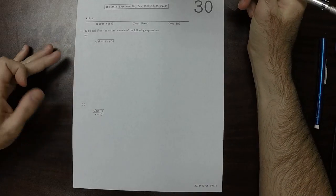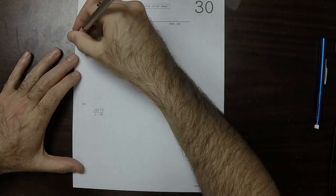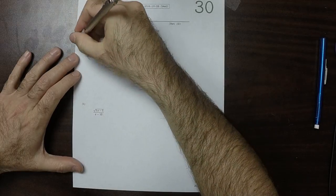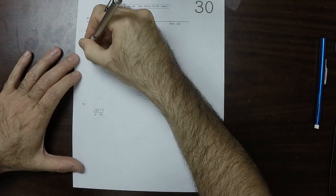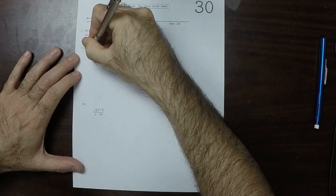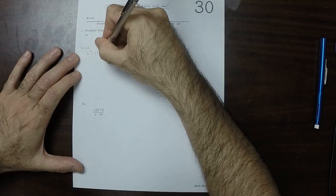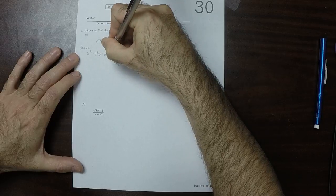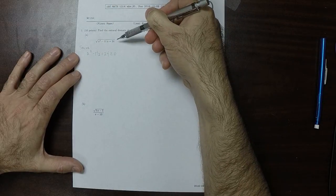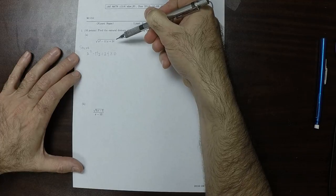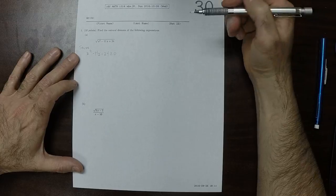This is the solution to written homework 30. The natural domain of this is that we need to solve the inequality x squared minus 11x plus 24 is greater or equal to 0, because the only thing that could go wrong is if there is a negative argument inside that even radical, inside that square root.